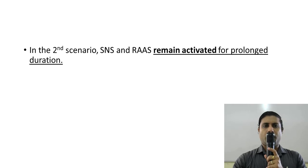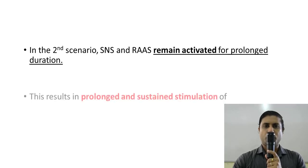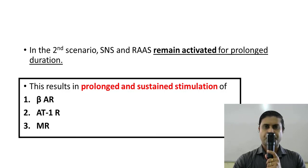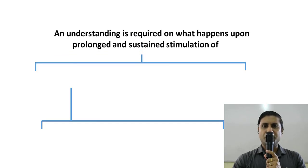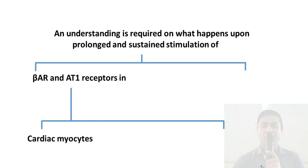Recalling scenario number two from the previous video, the SNS and the RAS remain activated for months or possibly years throughout the lifetime of the patient who has survived the myocardial infarction. This means there would be a prolonged and sustained stimulation of the beta-adrenergic receptors, the AT1 receptors, and the mineralocorticoid receptors. An understanding is required of what happens upon prolonged and sustained stimulation of the beta-adrenergic receptors and the AT1 receptors in the cardiac myocyte and cardiac fibroblast.